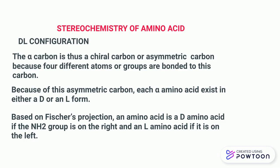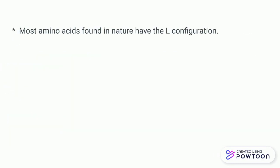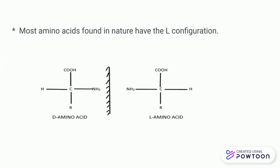Based on Fischer projection, an amino acid is a D amino acid if the NH2 group is on the right-hand side, and it is an L form if the NH2 group is on the left-hand side. Most of the amino acids found in nature are in L form. This is a diagrammatic representation of DL configuration of amino acids.